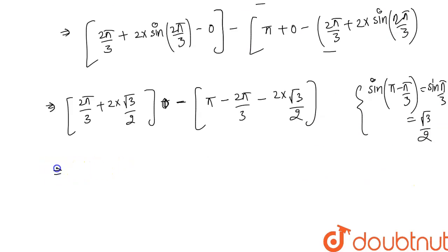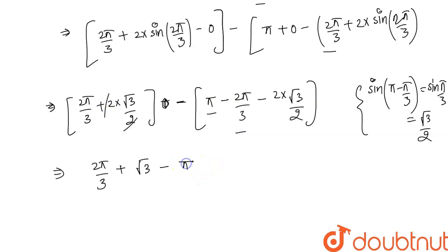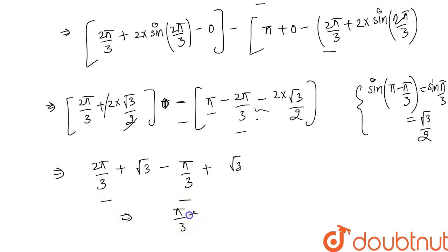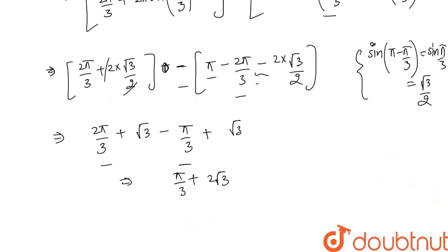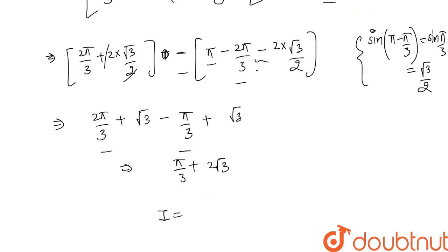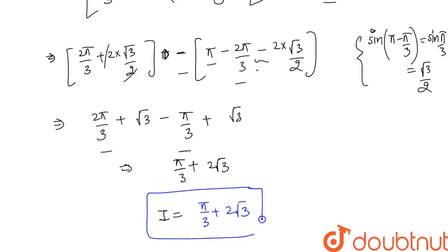Simplifying: we have 2π/3, and 2 × √3/2 = √3. Then minus of (π − 2π/3) = π/3, and the minus of −2 × √3/2 gives +√3. So it becomes 2π/3 − π/3 = π/3, and √3 + √3 = 2√3. Therefore our answer is π/3 + 2√3.